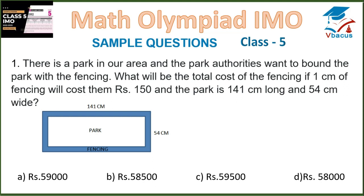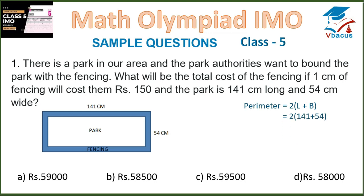There is a park in our area and the park authorities want to bound the park with fencing. What will be the total cost of the fencing if 1 cm of fencing costs Rs. 150, and the park is 141 cm long and 54 cm wide? As we know, the perimeter of any rectangular field is equal to 2 within bracket length plus breadth. Apply the numbers in the formula, so 2 within bracket 141 plus 54.